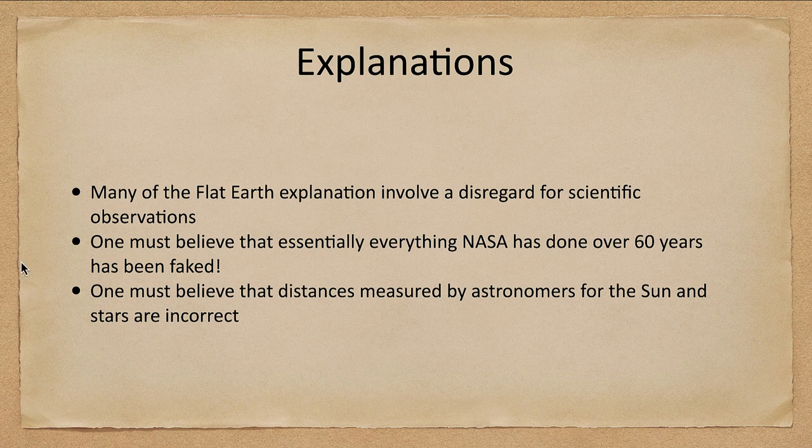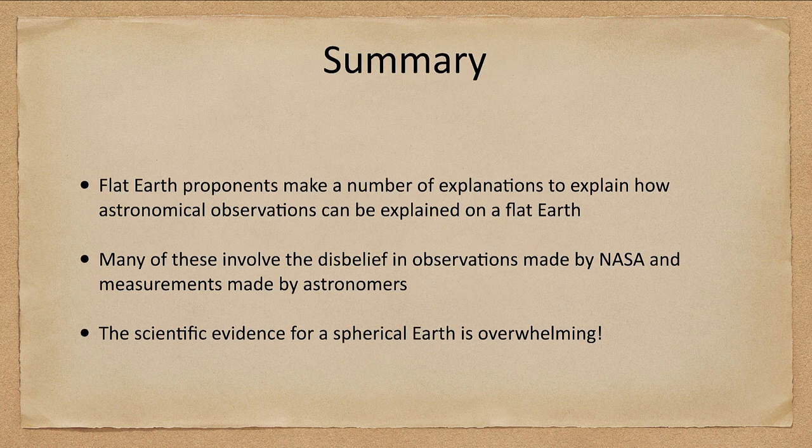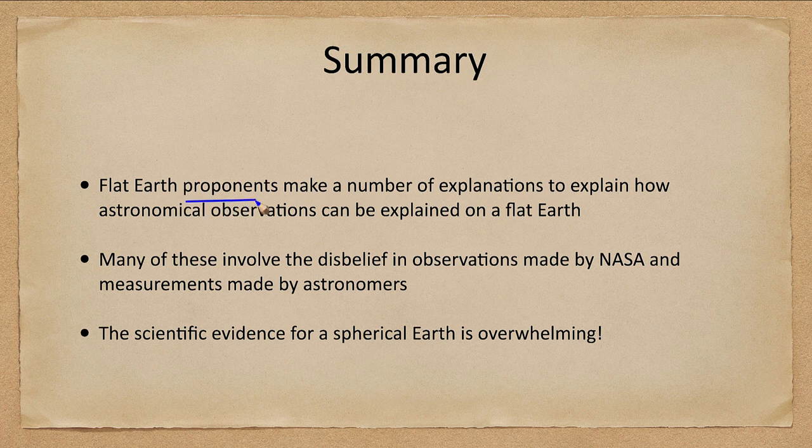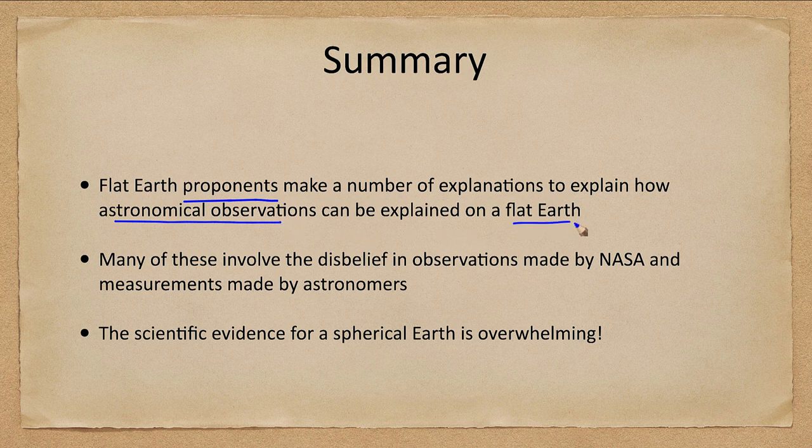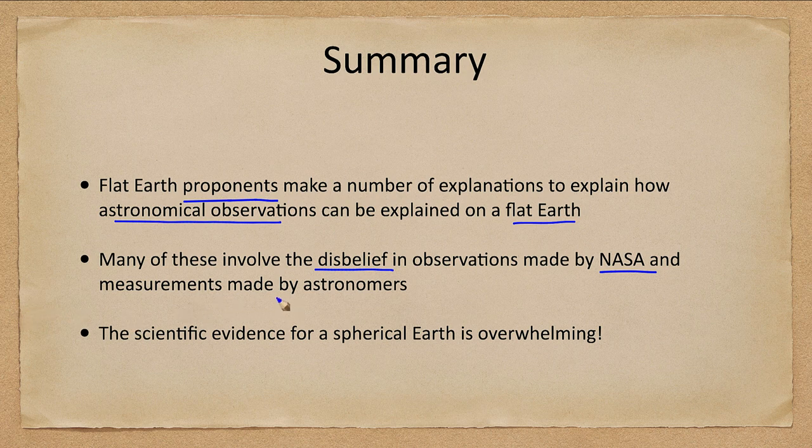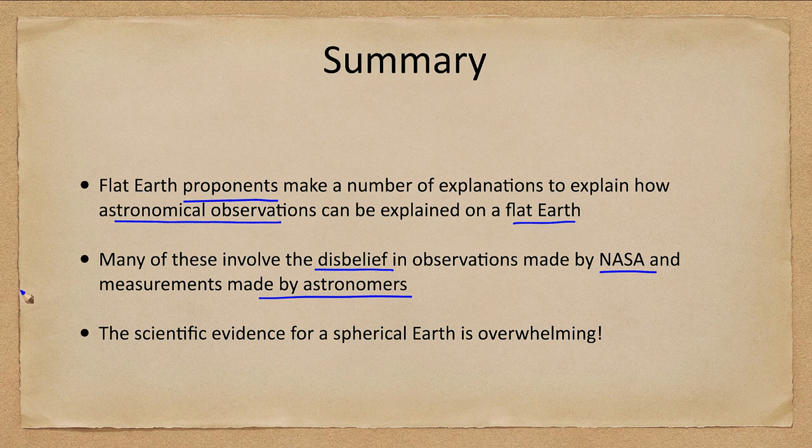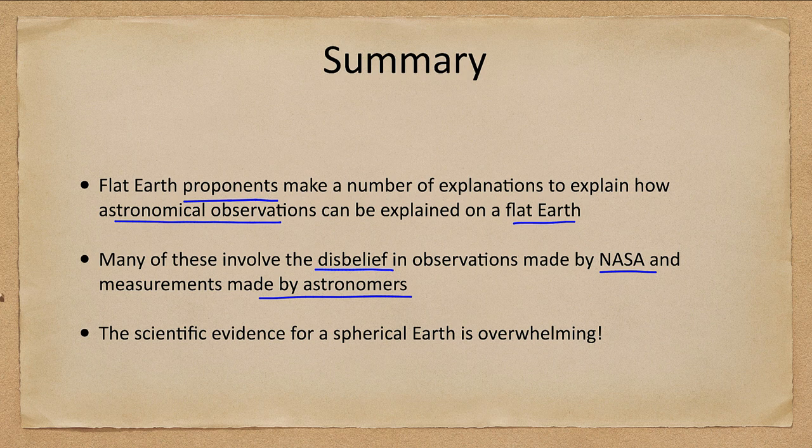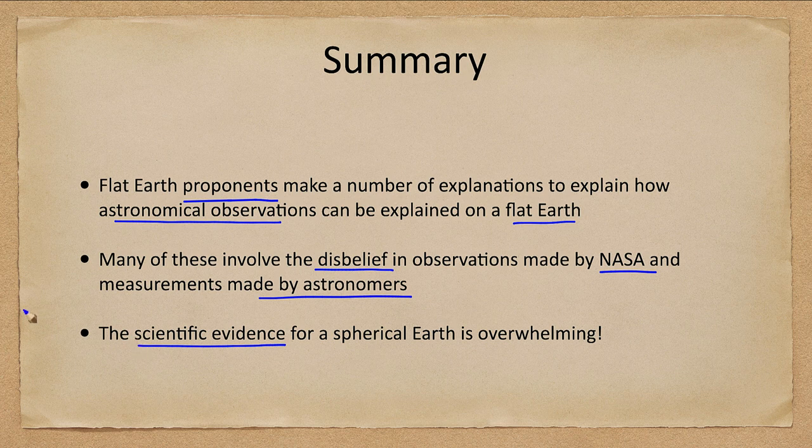Let's go ahead and finish up as we do with our summary. What we see is that flat Earth proponents make a number of explanations to explain how various astronomical observations can be explained under a flat Earth. To be fair, many of these do involve a disbelief in observations made by NASA, so you have to discount everything NASA has done and many observations and measurements made by astronomers, especially in terms of distances and how far away things are. At least in my opinion, the scientific evidence for a spherical Earth is overwhelming, and we've known this since the time of the early Greeks.